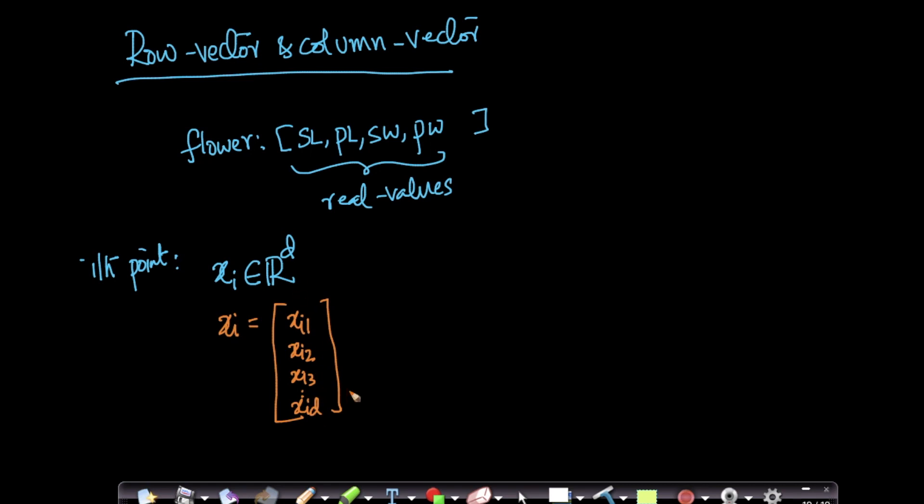And remember, this is a column vector, this is called a column vector, because my data point is represented as one column of data. So why is this a column? Because it has d rows and only one column and hence this is called a column vector.